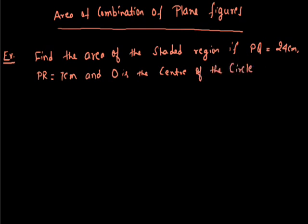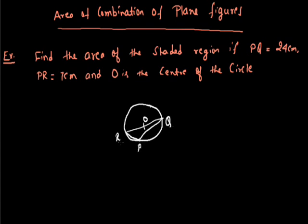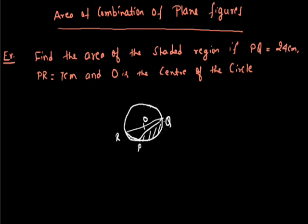A figure is given with a circle. O is the center of the circle. The points are P, Q, and R. We have to find this shaded area. Solution: Angle QPR is equal to 90 degrees — angle in a semicircle.